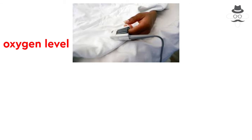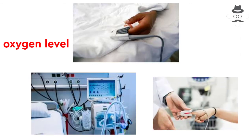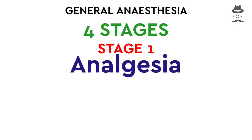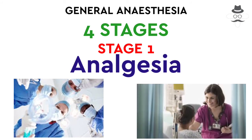There is surgical anesthesia. There are four stages of general anesthesia: Stage 1, Stage 2, Stage 3, and Stage 4. Stage 1 is the stage of analgesia. Stage 2 is the stage of excitement.